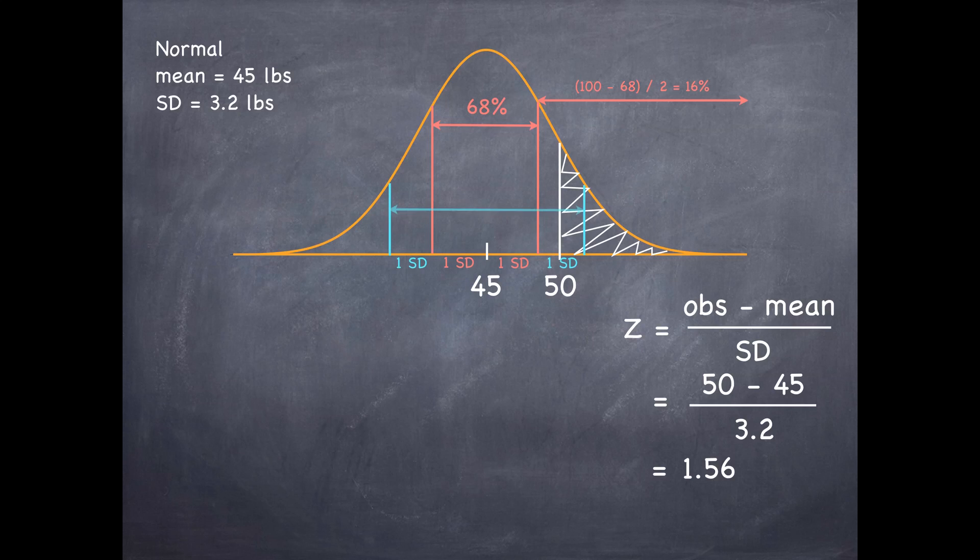If we venture one more standard deviation away from the mean, we're going to capture the middle 95% of the observations. And the percentage of observations that are more than two standard deviations above the mean is simply going to be 100 minus 95 divided by 2, once again because the curve is symmetric.